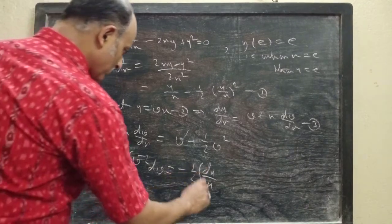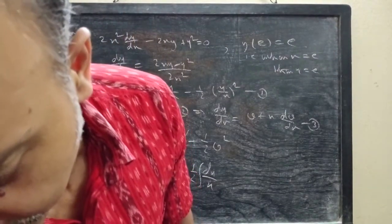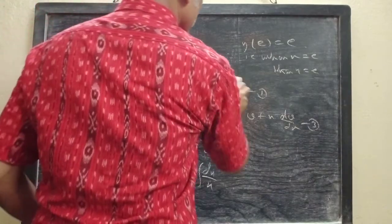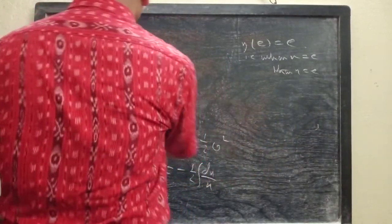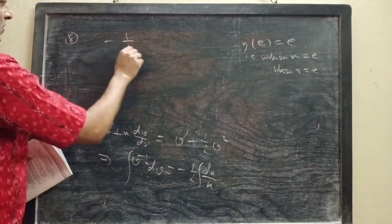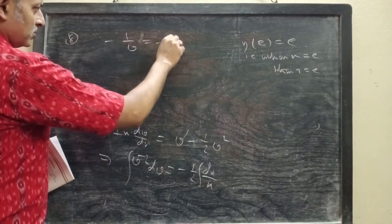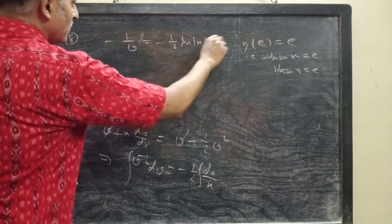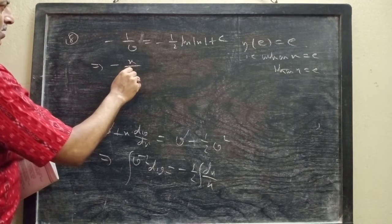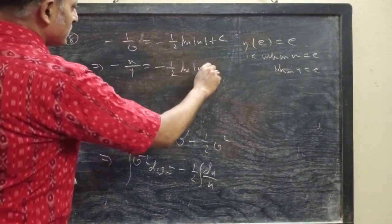Now integrating both sides we get minus 1/v equals minus half·ln|x| plus c. Now replace v by y/x, then you get minus x/y equals minus half·ln|x| plus c.